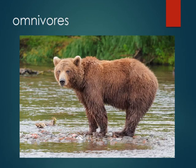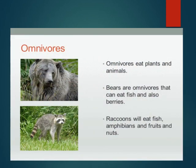Now let's move towards omnivores. Omnivores eat plants and animals. Examples of omnivores are bears, raccoons, rats, and human beings. Bears are omnivores that can eat fish and also berries. Raccoons will eat fish, amphibians, fruits, and nuts.